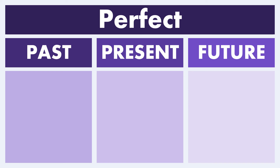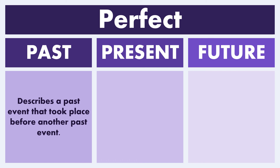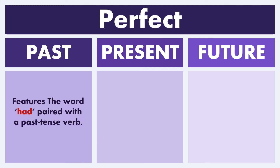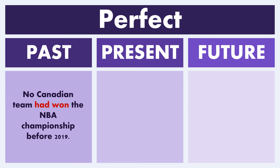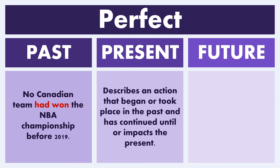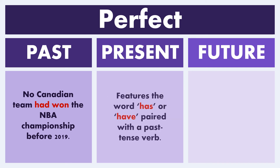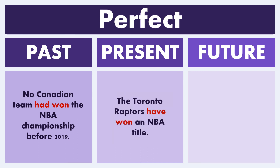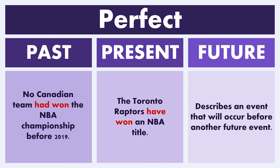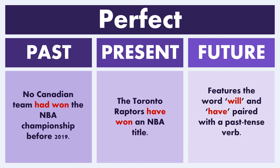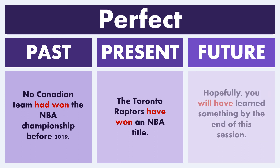Let's do a quick summary of the perfect mood. Past perfect: describes a past event that took place before another past event; look for 'had' paired with a past tense verb. Example: 'No Canadian team had won the NBA championship before 2019.' Present perfect: describes an action that began or took place in the past and has continued until or impacts the present; look for 'has' or 'have' paired with a past tense verb. Example: 'The Toronto Raptors have won an NBA title.' Future perfect: describes an event that will occur before another future event; look for 'will have' paired with a past tense verb. Example: 'Hopefully, you will have learned something by the end of this session.'